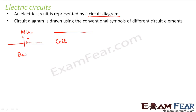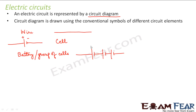Now if I want to represent a battery, or a group of cells, we represent it like this. The bigger line is the positive terminal and the smaller one is the negative terminal. So this is how we represent a battery or a group of cells.